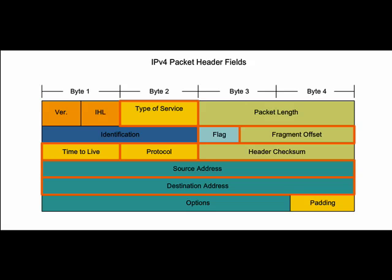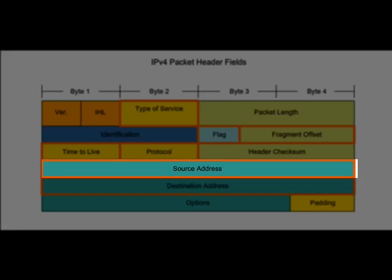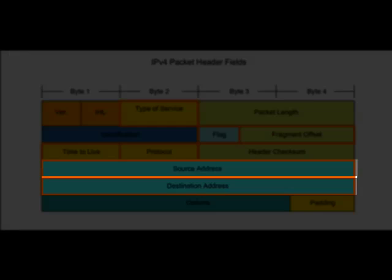IPv4 specifies many different fields in the packet header. You may wish to study the IP packet more closely, but for now note that the source address and destination address fields are crucial to delivering the data to the intended destination.